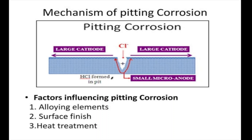So what exactly is going on? In pitting corrosion, a large cathode area and a very small micro anode area is created. Now, they are not made up of two different materials — they are made up of only a single material. Due to the presence of a particular pit, which is a small hole of small diameter but very narrow and very deep, any electrolyte that enters or penetrates within that pit is very difficult to escape out due to surface tension.